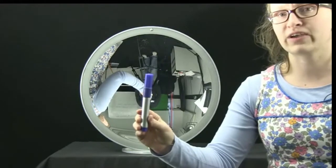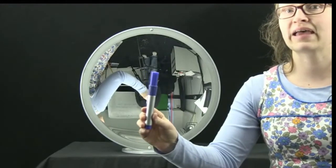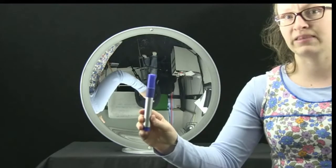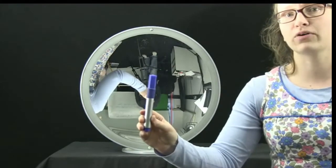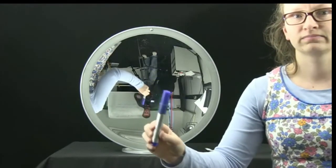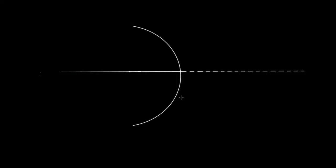Let's look at ray tracing to explain why we see this with the image of the whiteboard marker in the concave mirror. Let's imagine we're looking at a concave mirror — here's your eye. The focal point is here, the radius of curvature is around here, and we're looking at this object. We're going to start with the object very close to the mirror, just like we did in the demonstration, represented as an arrow.